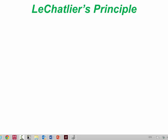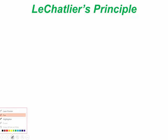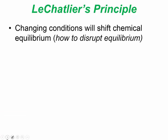You can basically do these three things to disturb equilibrium and cause the reaction to shift one way or the other. Changing concentration will establish a new initial set of conditions, making Q unequal to K.